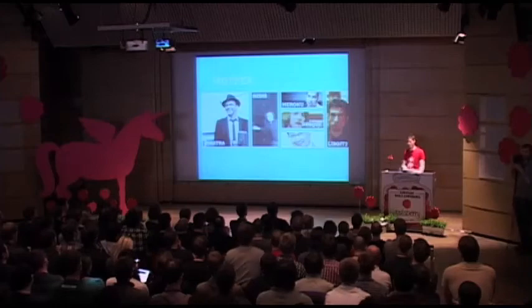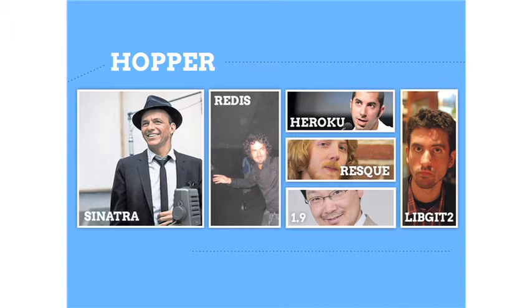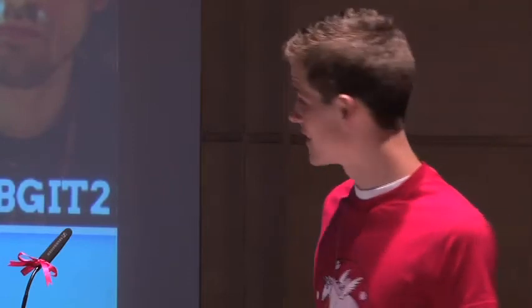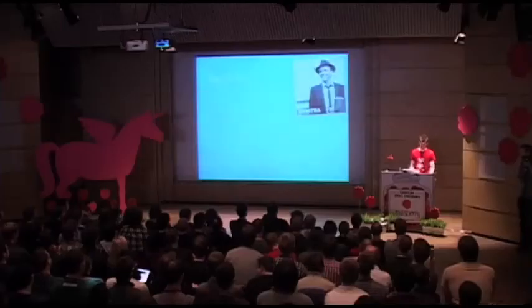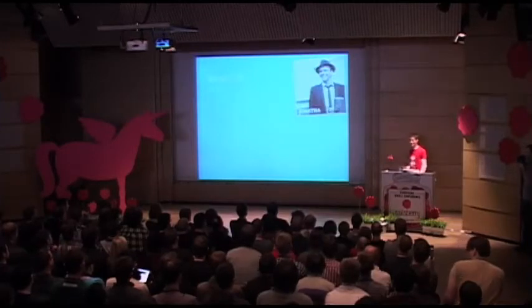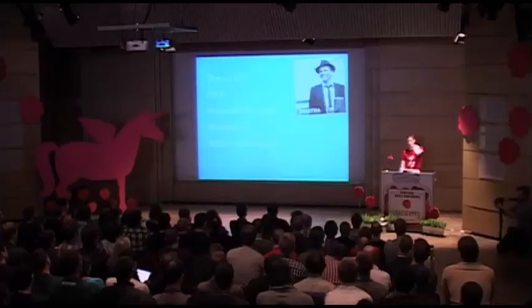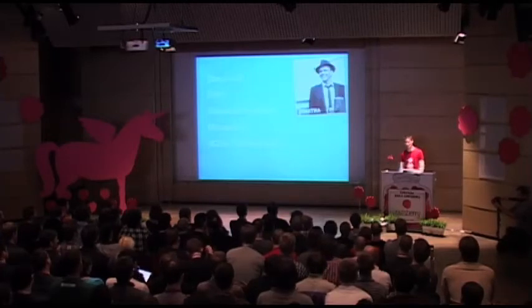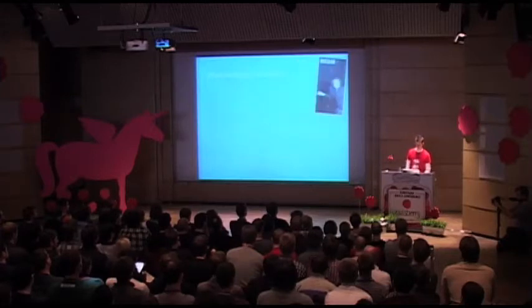These are all the components that make up Hopper: Sinatra, Redis, Heroku, Rescue, Ruby 1.9, and libgit2. I realize I'm advocating the use of Sinatra at Railsberry — deal with it. I like Sinatra because for this project it's a very simple UI and easy to get your head around. It uses pjax, which is a really cool way to do client-side Ajax very simply. Minimal front end — it uses Mustache, SCSS and CoffeeScript, which is sort of the standard we use at GitHub nowadays.